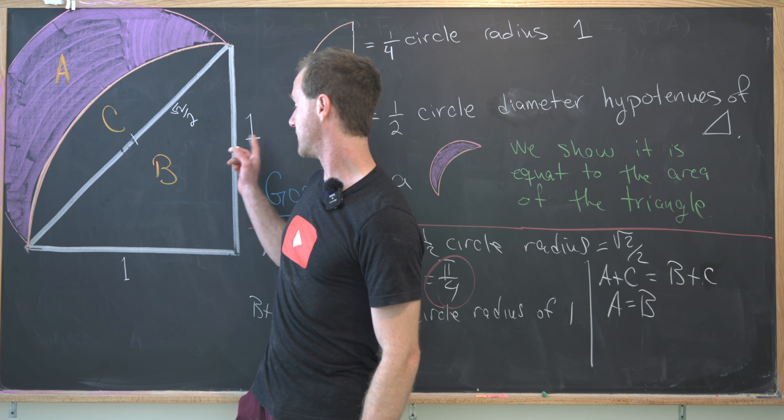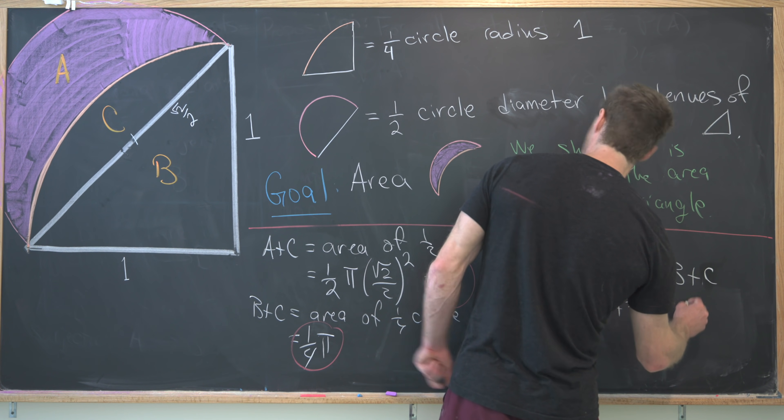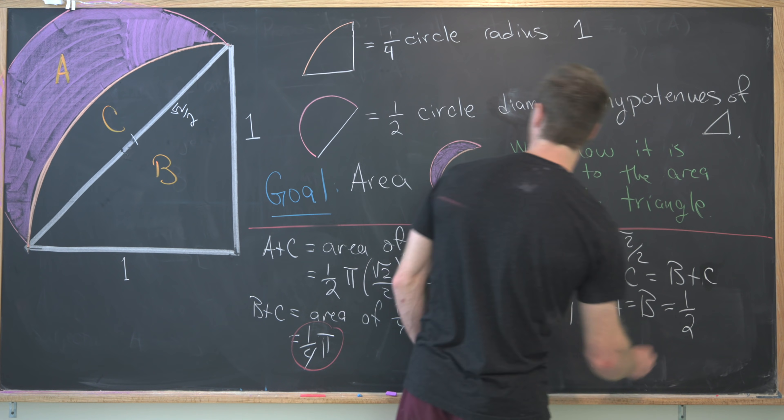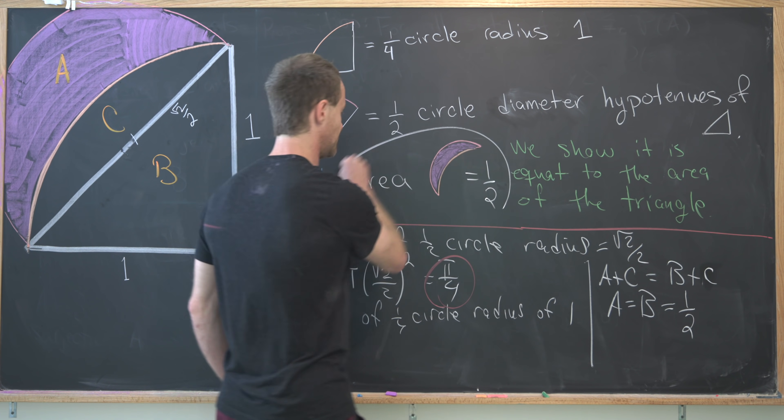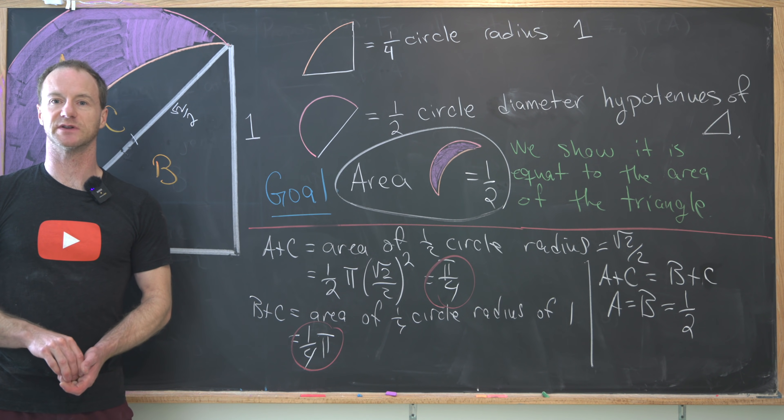So notice it's going to be one half base times height. So that means that this is equal to one half, one times one, or one half. So that finishes this problem. We've got the area of our lune is one half. And that's a good place to stop.